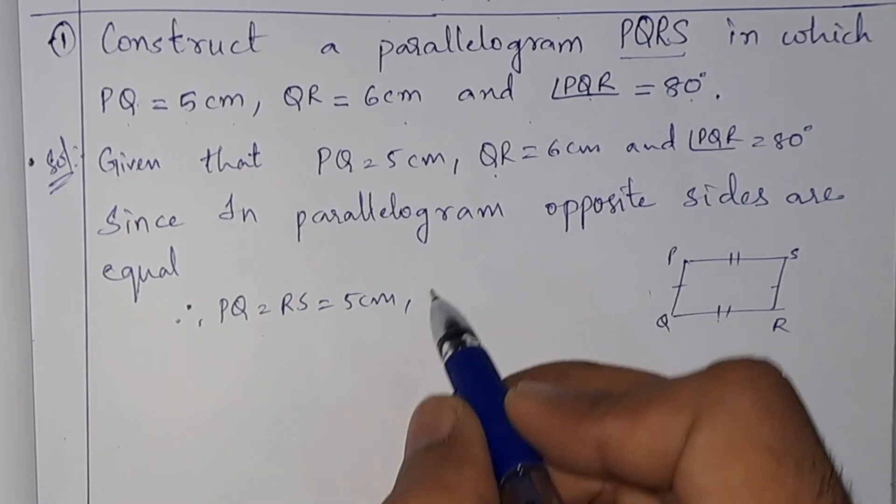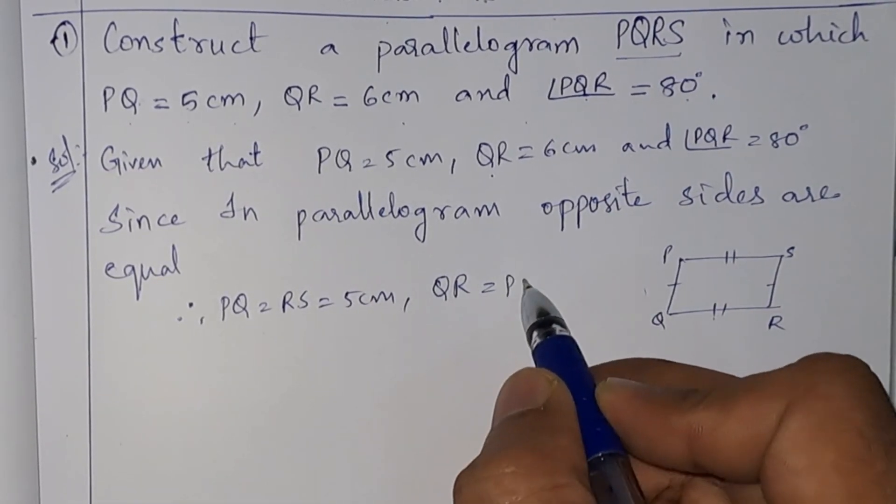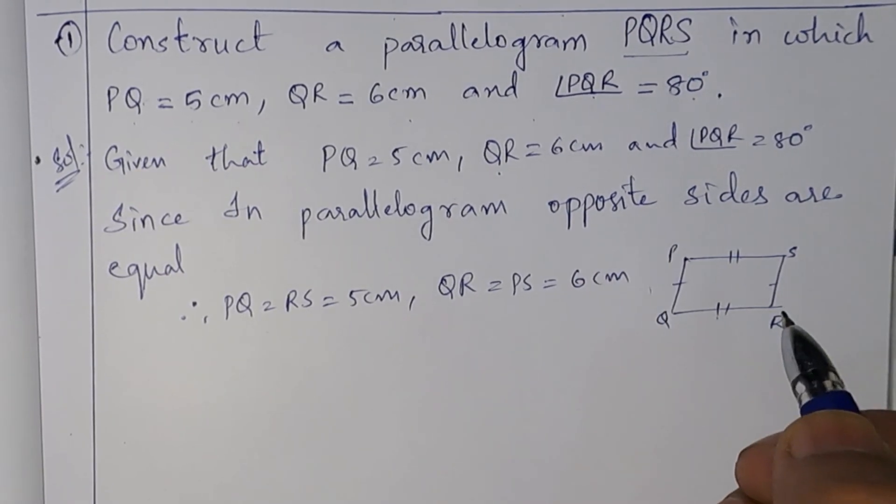And QR—we know QR. The opposite side of QR is PS. So PS equals 6 centimeters.